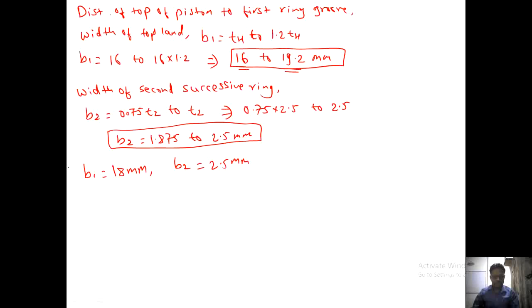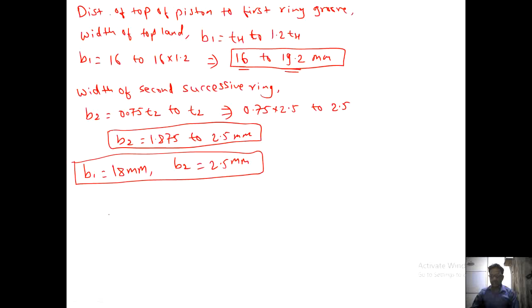The gap between the free ends of the ring (g₁, g₂) are yet to be found. We will continue this numerical in the next lecture, as it is a very vast problem. Remaining parts include piston barrel, piston skirt, piston pin design, and checking for maximum bending moment. Thank you.